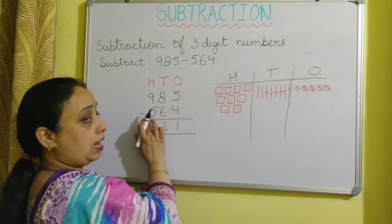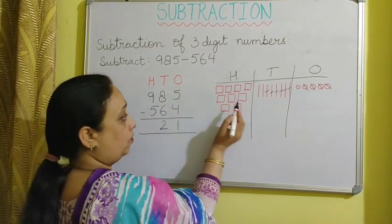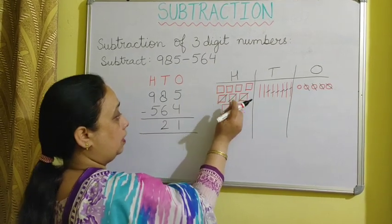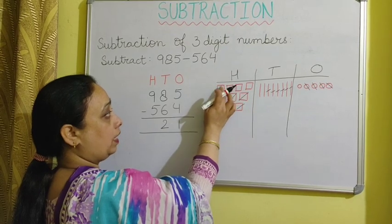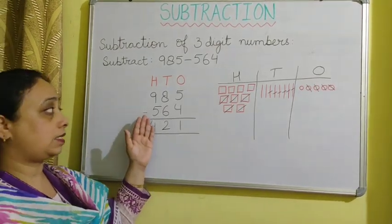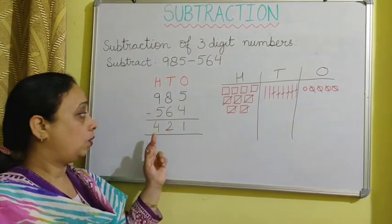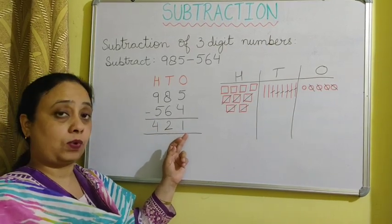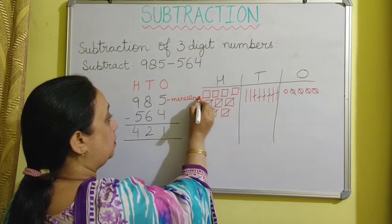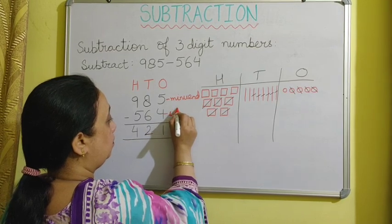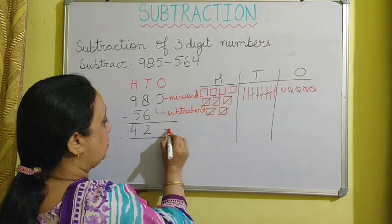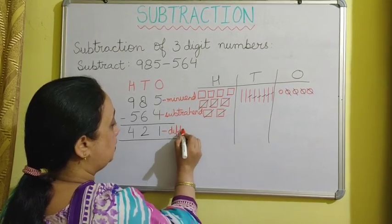We take away 5 hundreds from 9 hundreds, leaving 4 hundreds. So if we take away 564 from 985, we get the answer 421. The greater number is the minuend, the smaller number is the subtrahend, and the answer is the difference. And this is the minus sign. Isn't it easy to subtract?